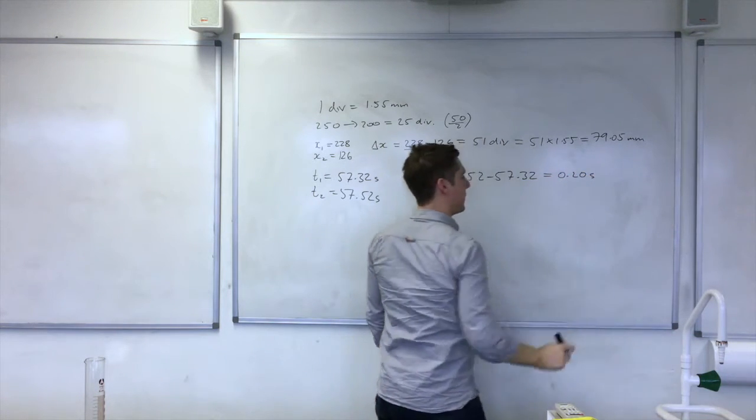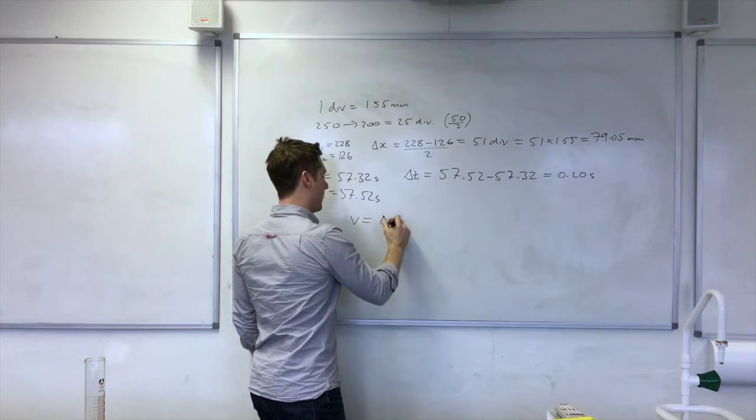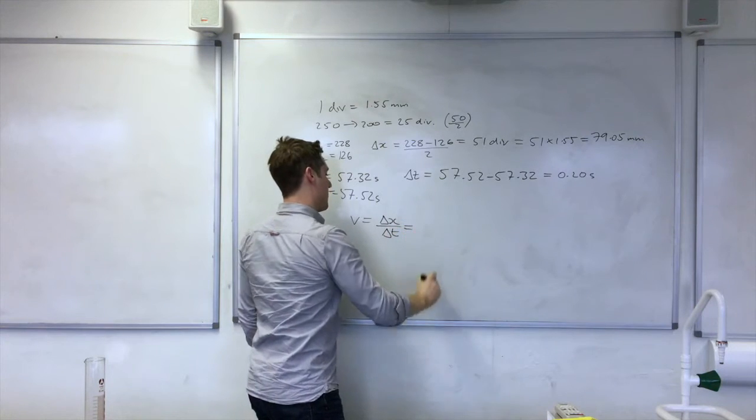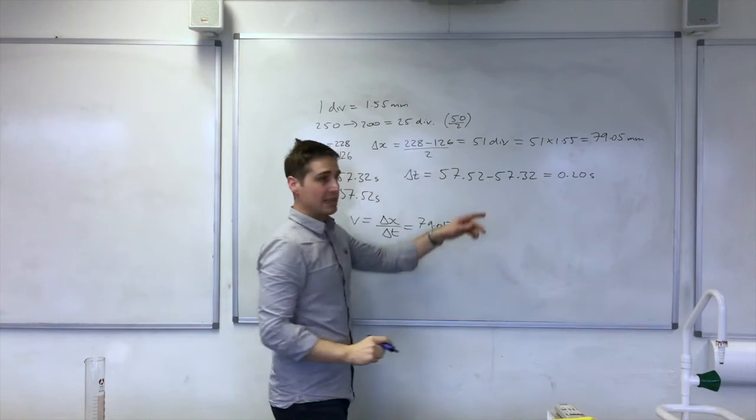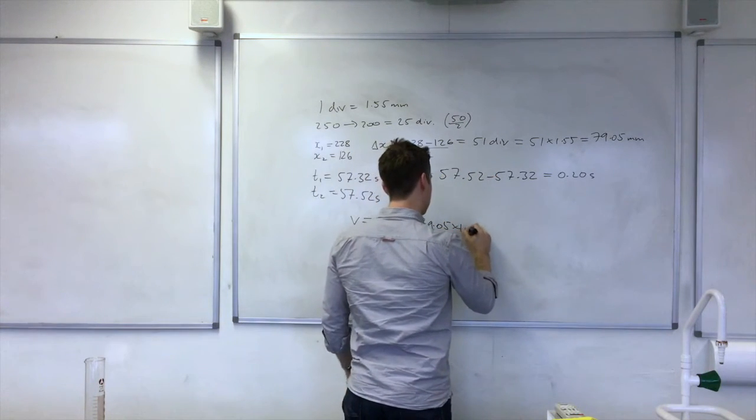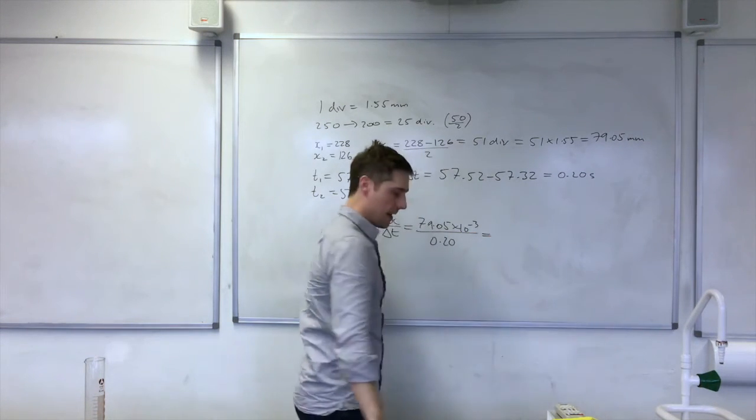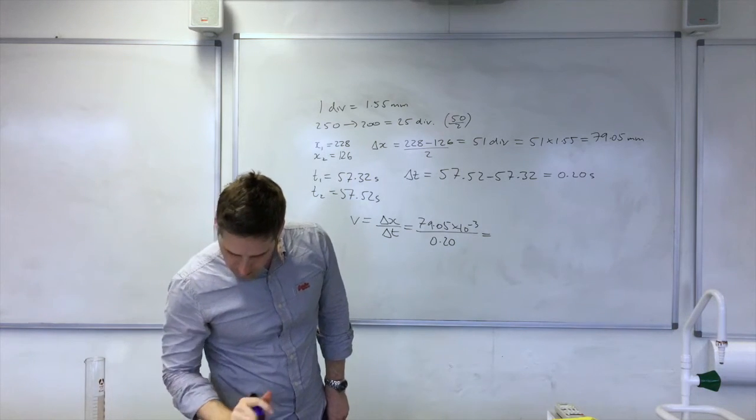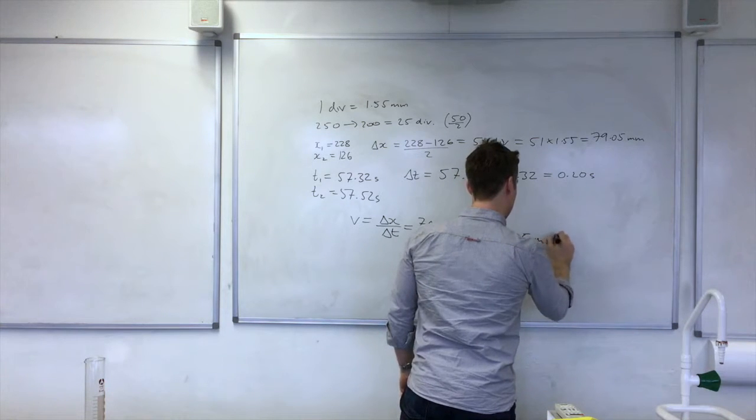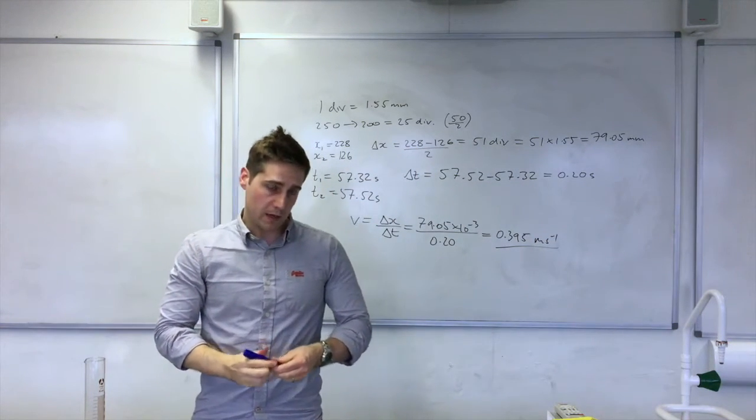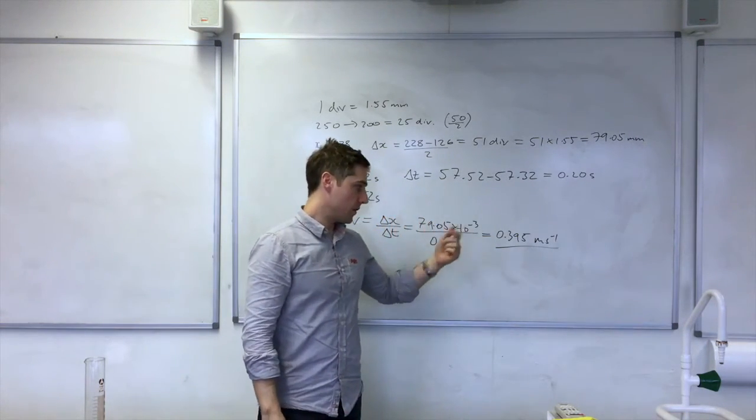Velocity is the rate of change of displacement, so 79.05, that's in millimeters, so I'm going to convert that to meters. That equals 0.395 meters per second, and that was my value for the first drop that I measured for the terminal velocity.